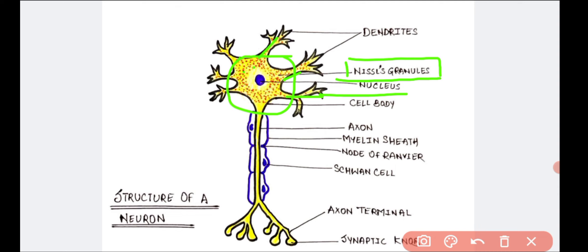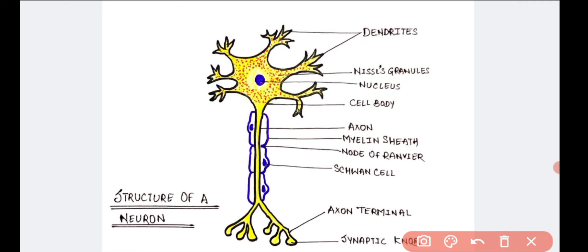These short fibers arising from the cell body, having many branches, are called dendrites. Dendrites also contain Nissl granules. Dendrites transmit the impulse towards the cell body — that means they receive the impulse from other neurons and transmit it towards the cell body.